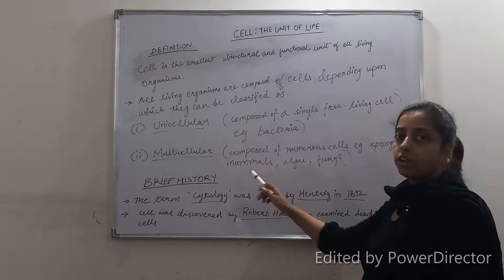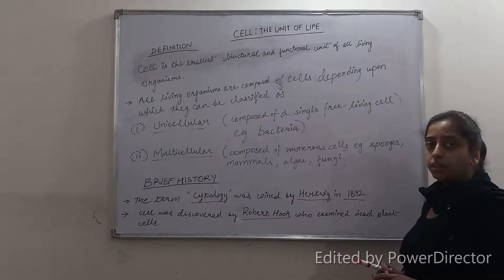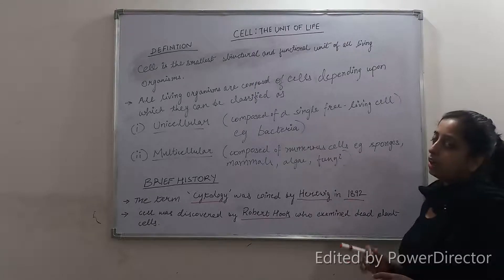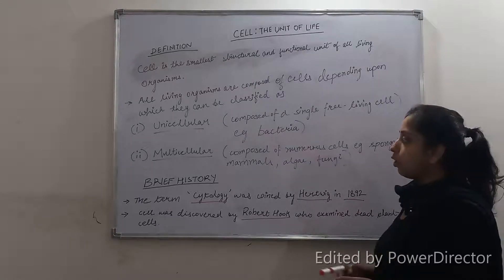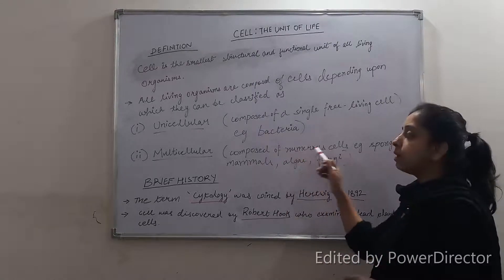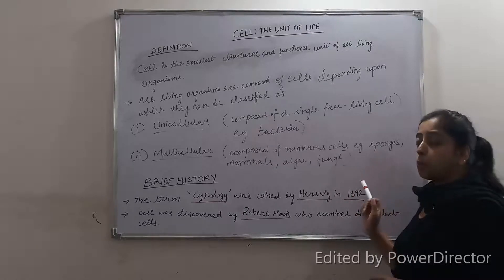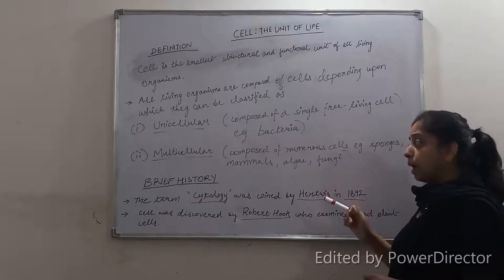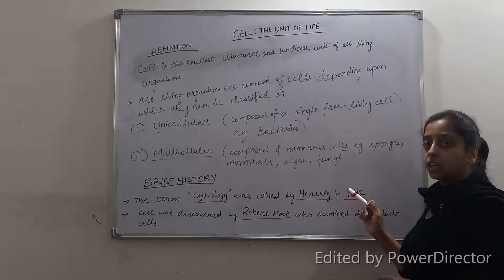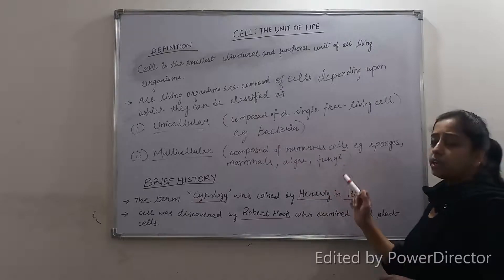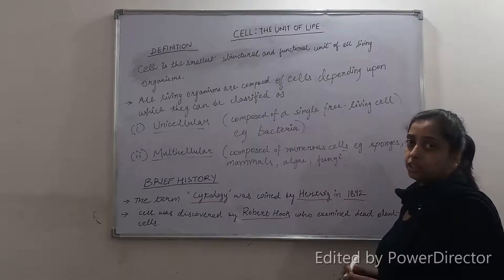Now, multicellular organisms — we, all human beings, are included in the multicellular organisms. These are composed of numerous cells. Examples are sponges, mammals, algae, and fungi. These multicellular organisms have a very complex structure.